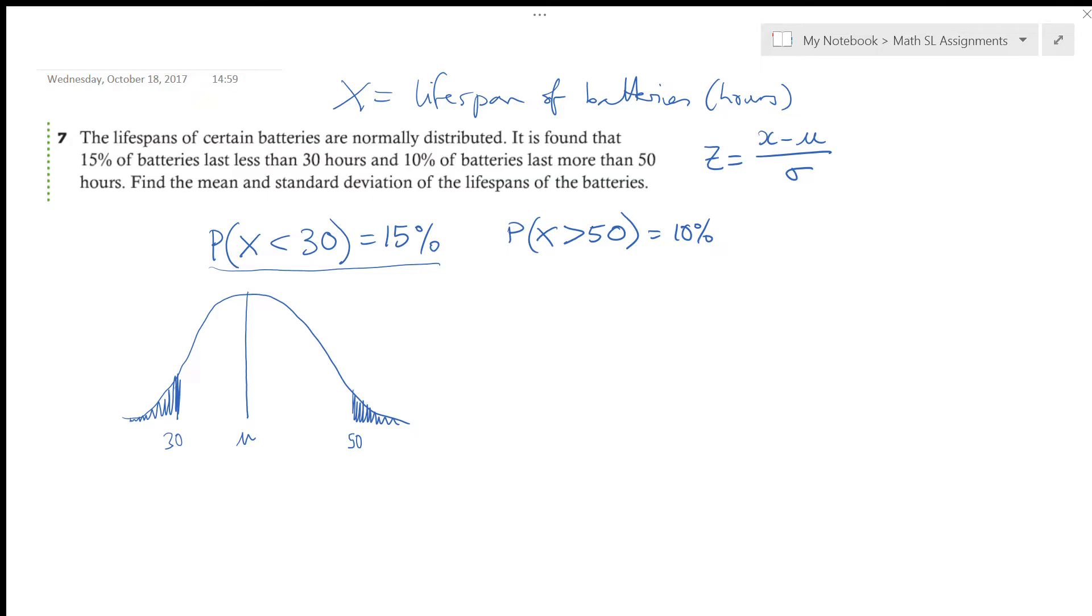So what I need to do is think about what does this look like on a standard normal, right, with a mean of 0. What is this value here that has 15% shaded? And what is this value here that has greater than 10% shaded? Alright, so the first thing I'm going to do is try and find these values here. So I'll call this A and B.